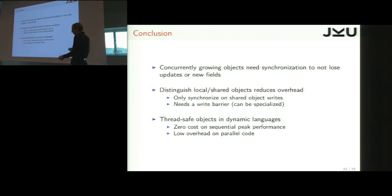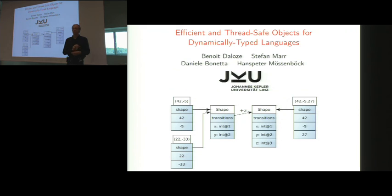And then, even then, we can specialize the write barrier to be more efficient. So overall, we get to have thread-safe objects in dynamic languages with zero cost on sequential peak performance, and very low overhead on parallel code. So that's it. Thank you.